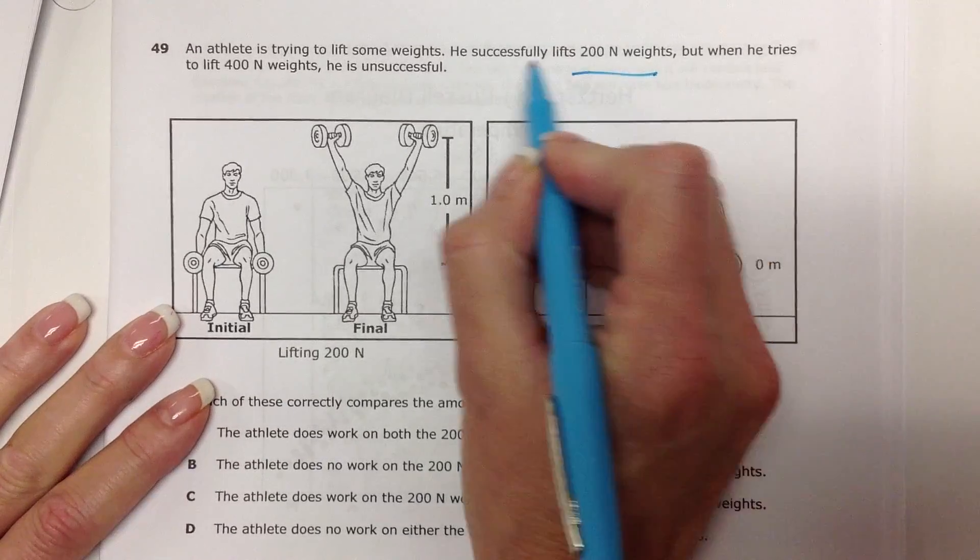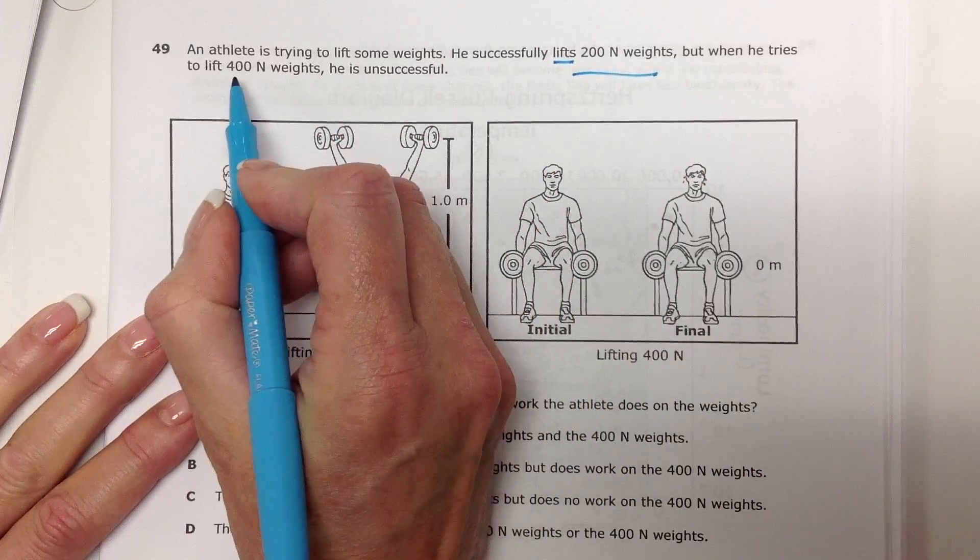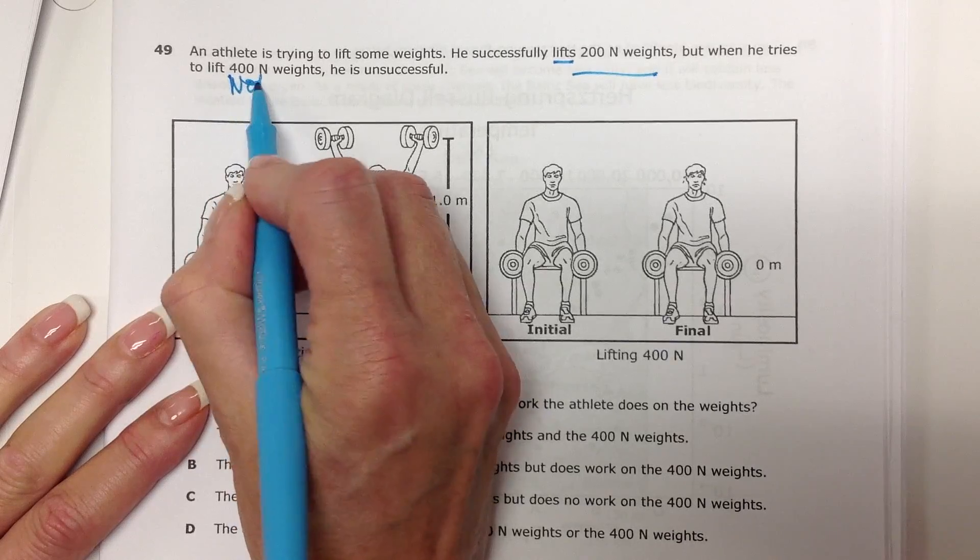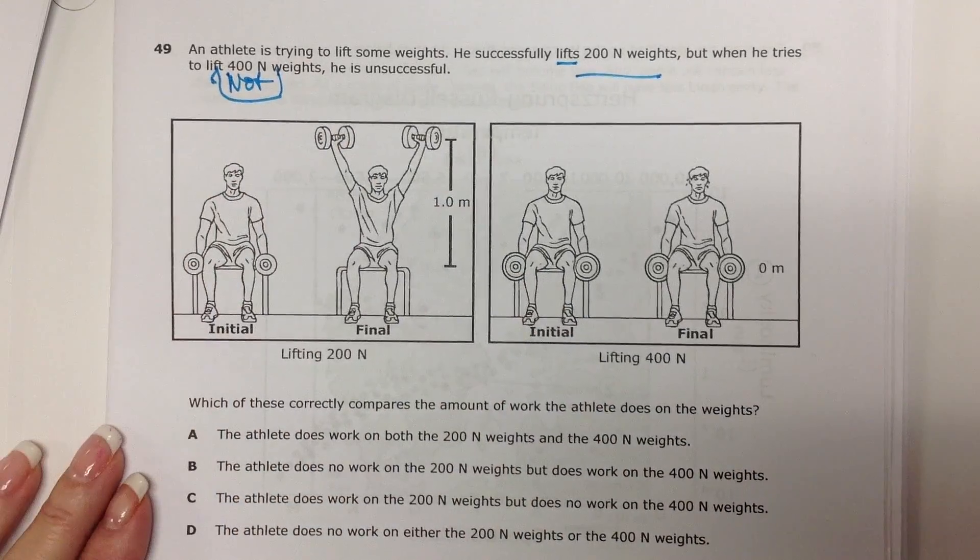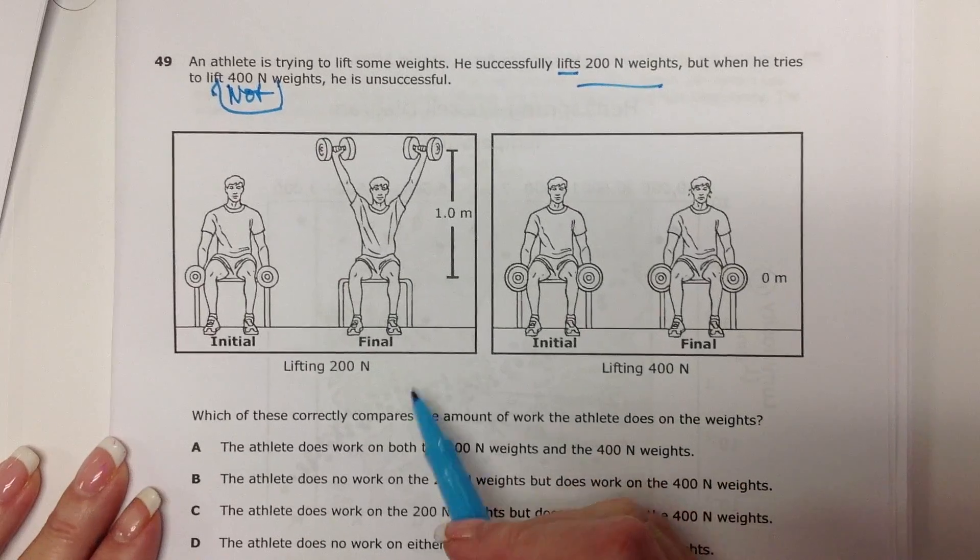So he does lift his 200, but not, he can't do the 400, right? Alright, so let's see what's going on here. We see a picture of him.